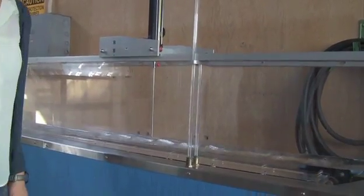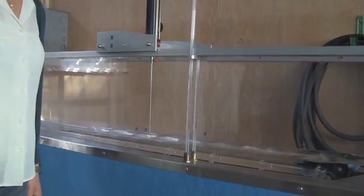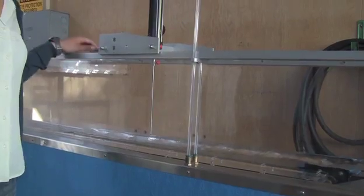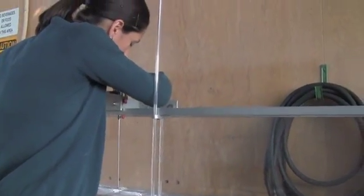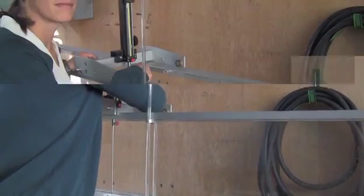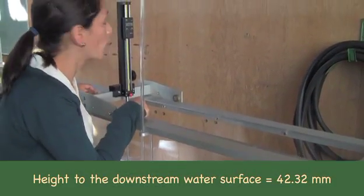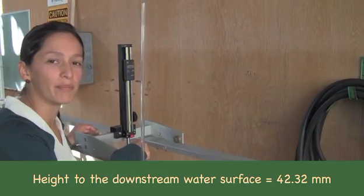Now we are going to measure the height to the water surface downstream. The height is 42.32 millimeters.